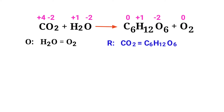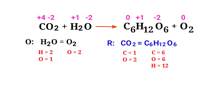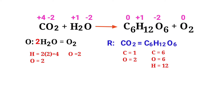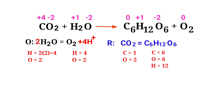Now balance the number of atoms in the two half reactions. In the oxidation half reaction, to balance the oxygen atoms, we need to put a coefficient of 2 in front of H₂O. The oxygen atoms are now balanced. To balance the hydrogen atoms, we produce H⁺ ions. The number of atoms are now balanced in the oxidation half reaction.